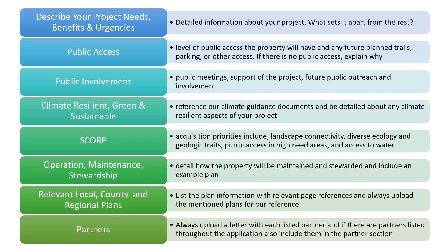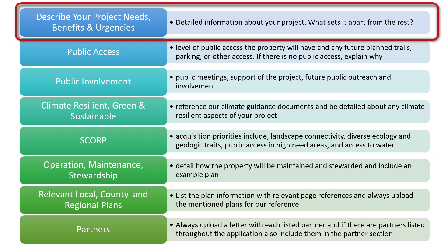We have covered all of the ready-to-go requirements, which account for 15 of the total 100 available points an application can receive. The remaining 85 available points on an acquisition application can be earned by answering the project criteria questions. These questions were already covered in the main workshop presentation, so I will only elaborate where there are specific acquisition-related differences. At 25 total points, the needs, benefits, and urgencies question accounts for the largest available points in your application. This is your opportunity to tell us what sets your project apart from the rest, and you will want to spend considerable time making sure you fully answer this question.